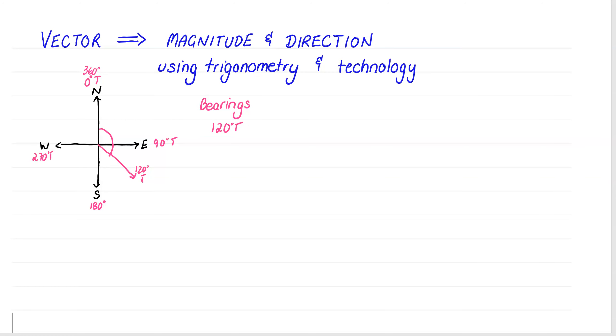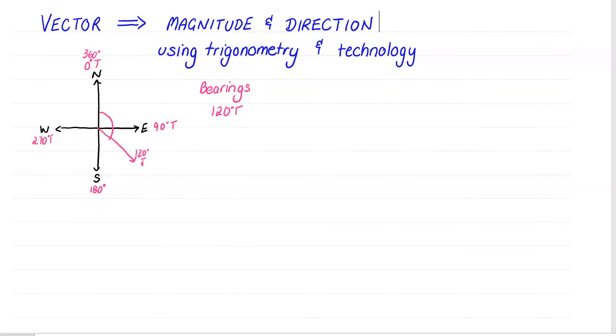All right, let's begin by taking a simple vector. So let's consider 2, 5 and we want to look at its magnitude and its direction. Now its magnitude is not a biggie because we know how to do that by now, that's just using our friend Pythagoras. We're going to go 2 squared plus 5 squared which gives me root 29.